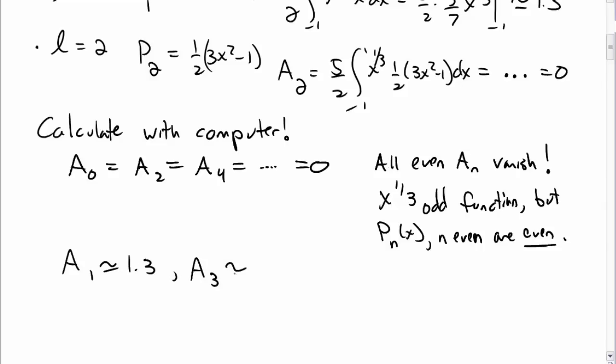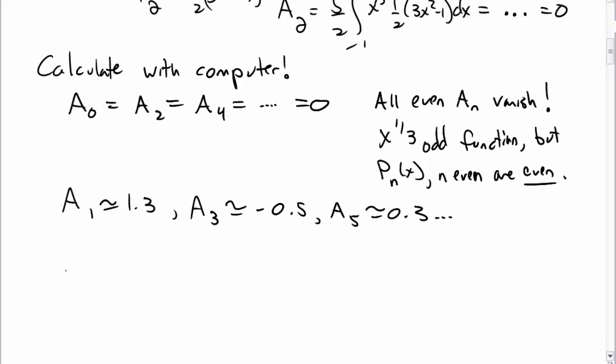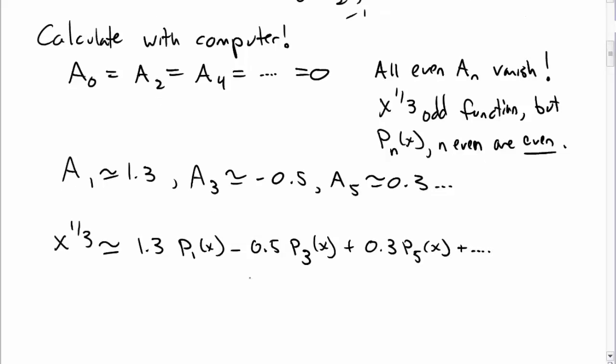Now the a sub l's where l is odd are not 0. And so when you calculate them, you get calculations looking something like this. Again, you can calculate that with a computer. We'll show in a second how we might do that. So what that means is you can expand x to the 1/3rd as 1.3 times P_1 minus 0.5 times P_3 plus 0.3 times P_5, etc. etc. For all the odd Legendre polynomials.